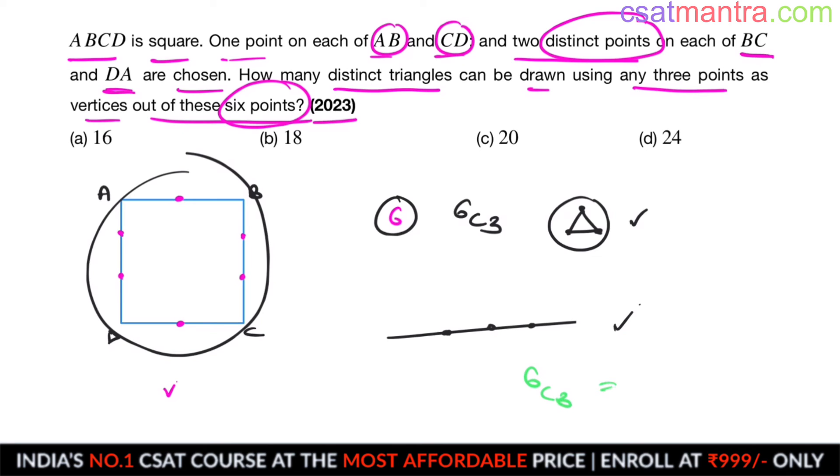Now six C three expanding. Six into five into four by three into two into one. Three twos are six. Six and six gets cancelled. Five fours are twenty. Answer C.